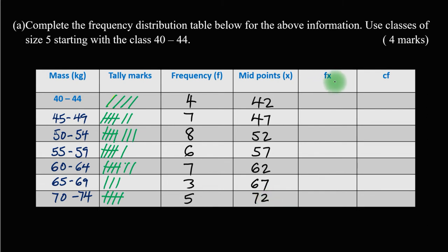From there we need to find the column of fx - we multiply the frequency column by the midpoint x column. So 4 times 42 gives 168, 7 times 47 gives 329, 8 times 52 gives 416, 6 times 57 gives 342, 7 times 62 gives 434, 3 times 67 gives 201, and finally 5 times 72 gives 360.